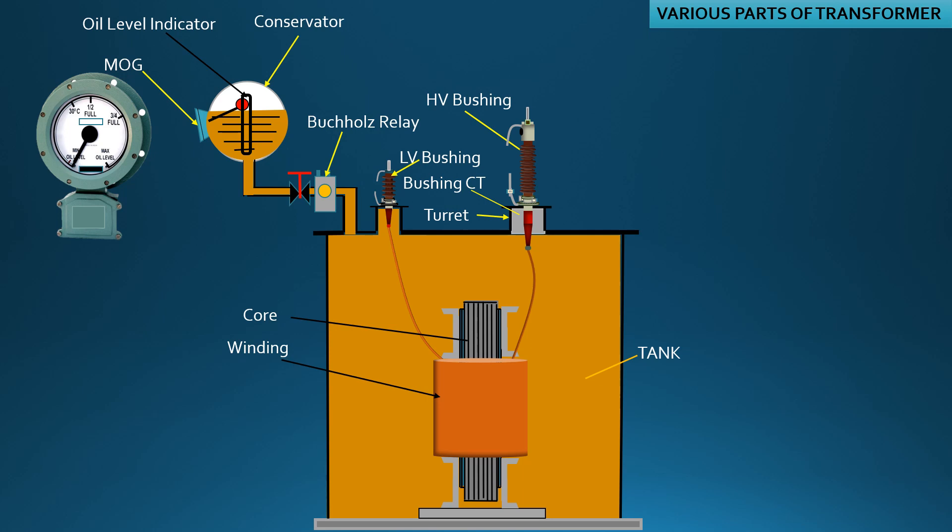MOG indicates the level of oil inside the transformer tank. The conservator tank during normal operation remains one-third filled at 30 degrees Celsius.